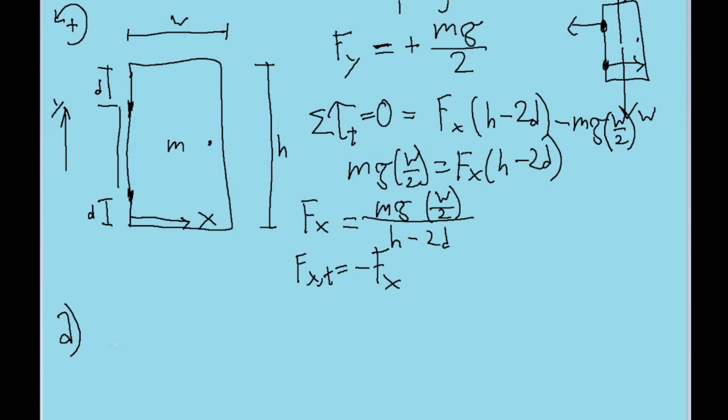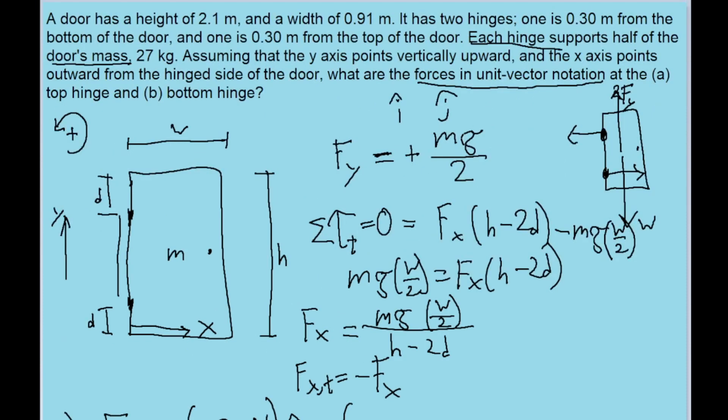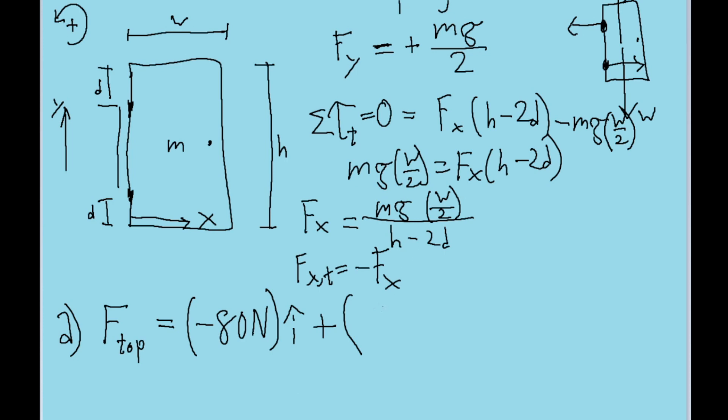Now let's write down our final answers in unit vector notation. The force from the top hinge in the horizontal direction is this expression right here except negative. So plugging this into our calculator, we find a force of about negative 80 newtons. And this is in the horizontal direction, so i hat. And then in the j direction, there's a positive force of mg over 2. If you put that into our calculator, we find a force of about 1.3 times 10 to the power of 2 newtons. And that's in the j direction.